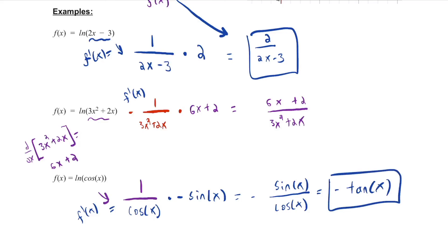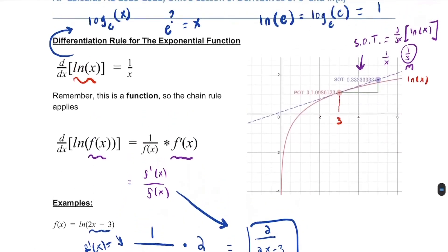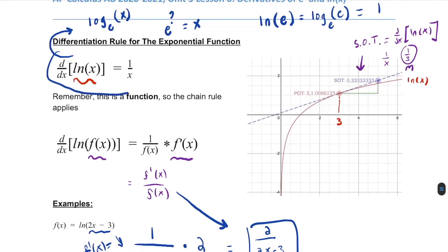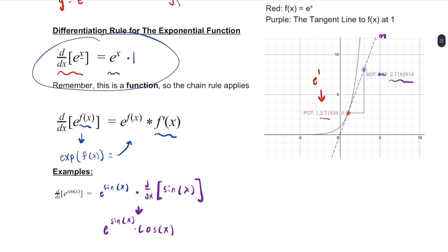Key points here. You have to have memorized the derivative of natural log of x is 1 over x. And then chain rule if necessary. The derivative of e to the x is e to the x. And then chain rule if necessary.